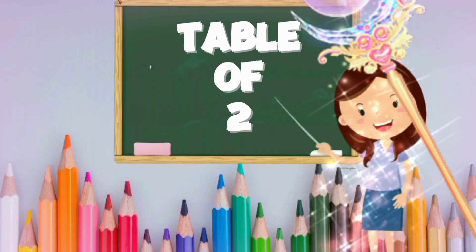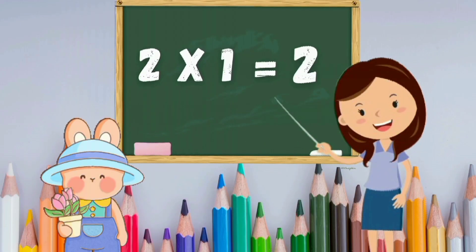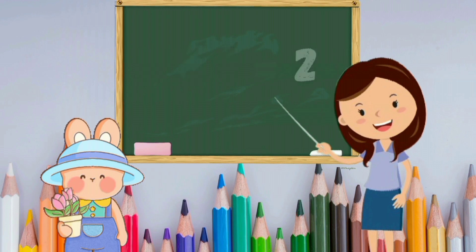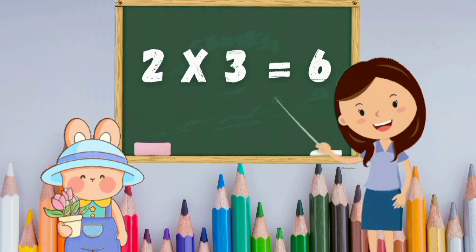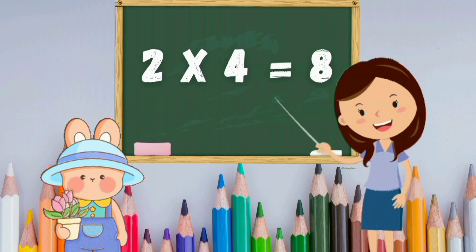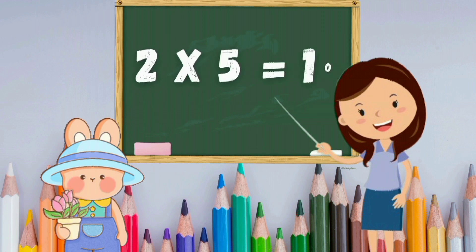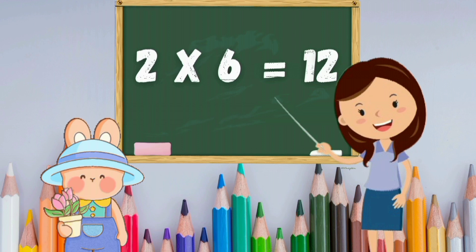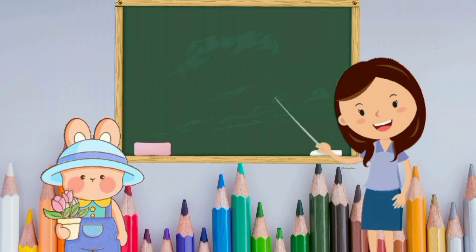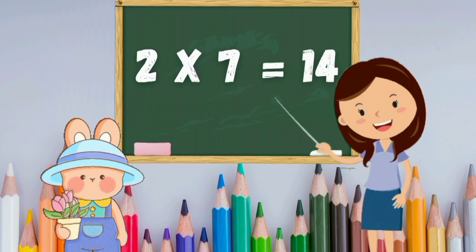Table of two. Two, one's a two. Two, two's a four. Two, three's a six. Two, four's an eight. Two, five's a ten. Two, six's a twelve. Two, seven's a fourteen.